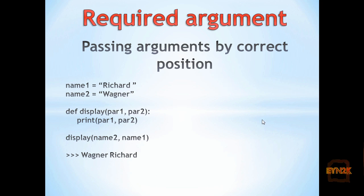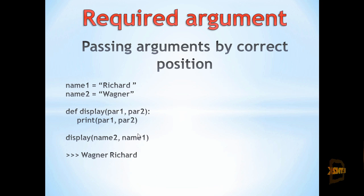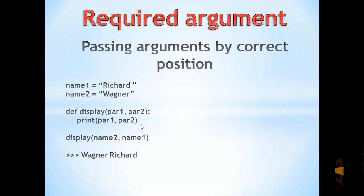Here is an example of passing arguments by correct position, such that we have the variable name1 and name2 equal to the strings Richard and Wagner. We can pass two parameters to the function, such that we have name2 and name1 being passed to the function display, then simply printing off the two parameters. Since we have not named the variables inside the function appropriately, name2 will be passed to parameter1 and name1 to parameter2. So we will print off Wagner and Richard, rather than Richard and Wagner.